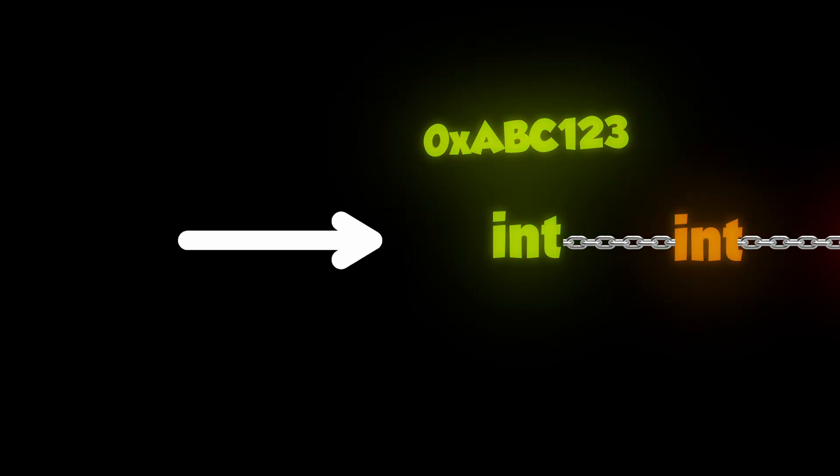The pointer points to the first value in the array's address, and then if you want to access the next value, we increment the pointer by one, which we do by typing this. So the pointer never actually points to the whole array, it just takes turn pointing to the different values.